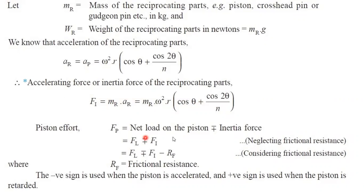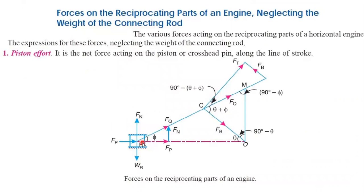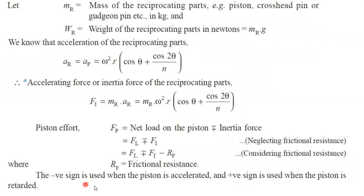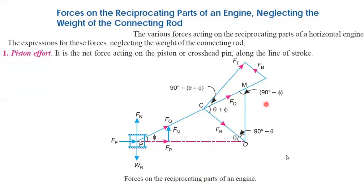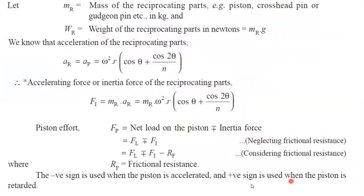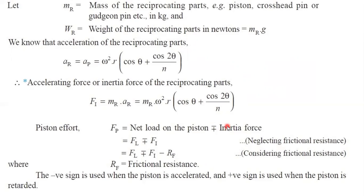Piston effort is the net load on the piston, plus or minus the inertia force. The minus or plus sign depends on the piston's motion. When the crank rotates in the clockwise direction, the piston is accelerated — and the negative sign is used when the piston is accelerated. After a complete rotation the piston returns, i.e., it is retarded, and the positive sign is used when the piston is retarded.